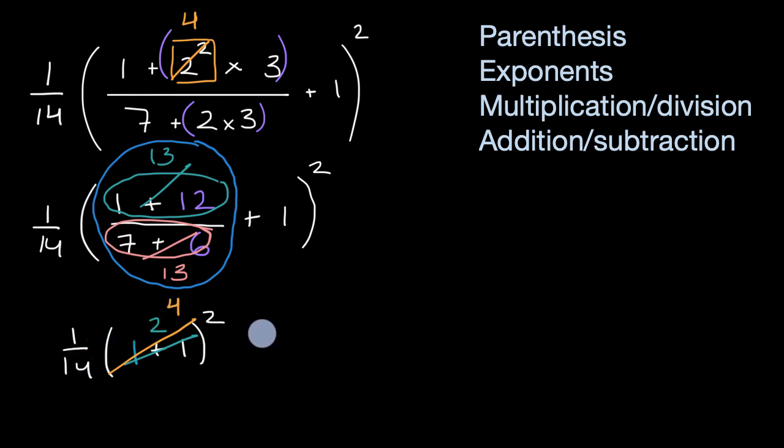And then we're going to multiply one over 14 times four. Now you could interpret this and they're equivalent. You could say this is the same thing as multiplying one-fourteenth times four. Or you could say this is the same thing as multiplying one times four divided by 14. Either way you look at it, you're going to get four over 14.